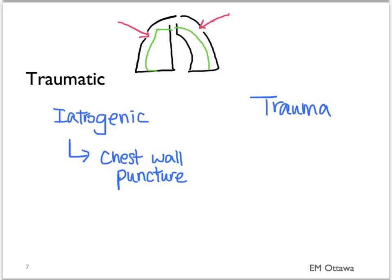They can also happen in the setting of trauma with penetrating injury either in the setting of an open wound all the way down to the pleura or from rib fractures puncturing the pleura.